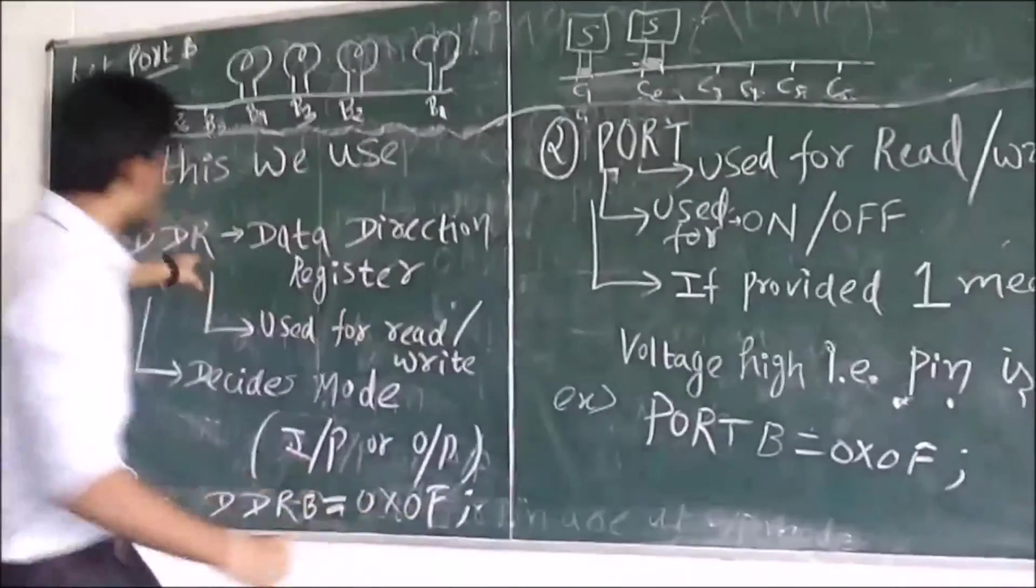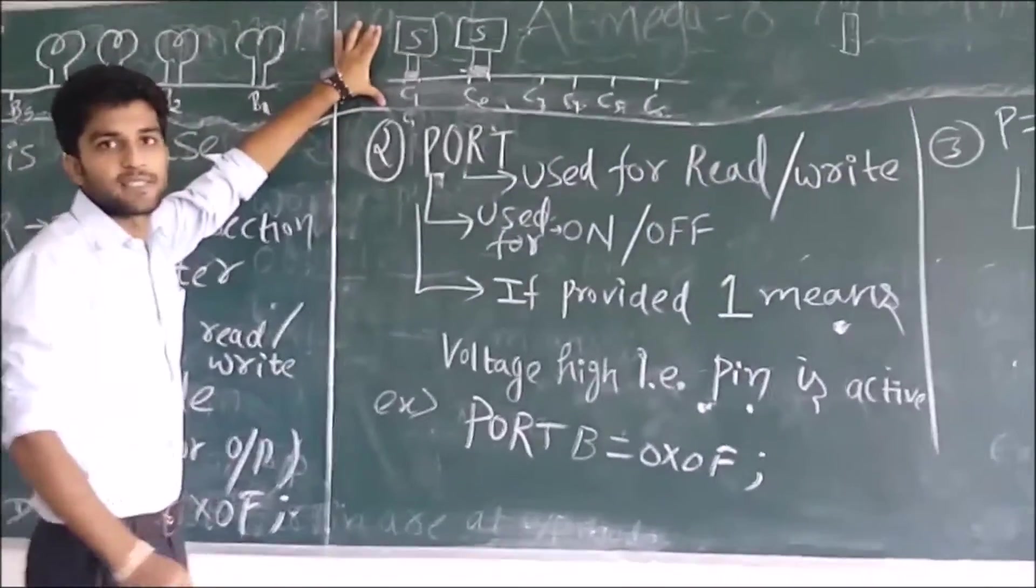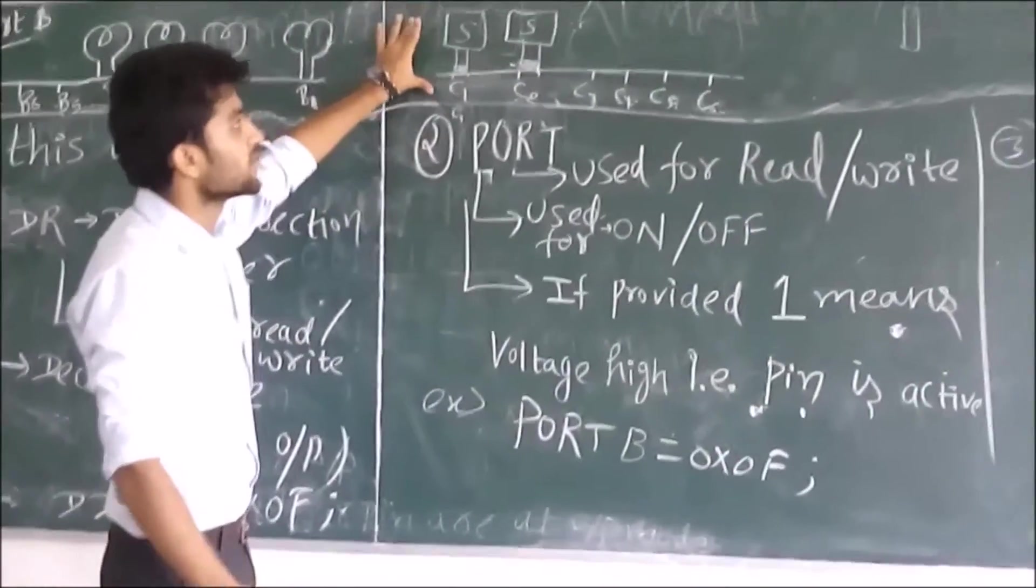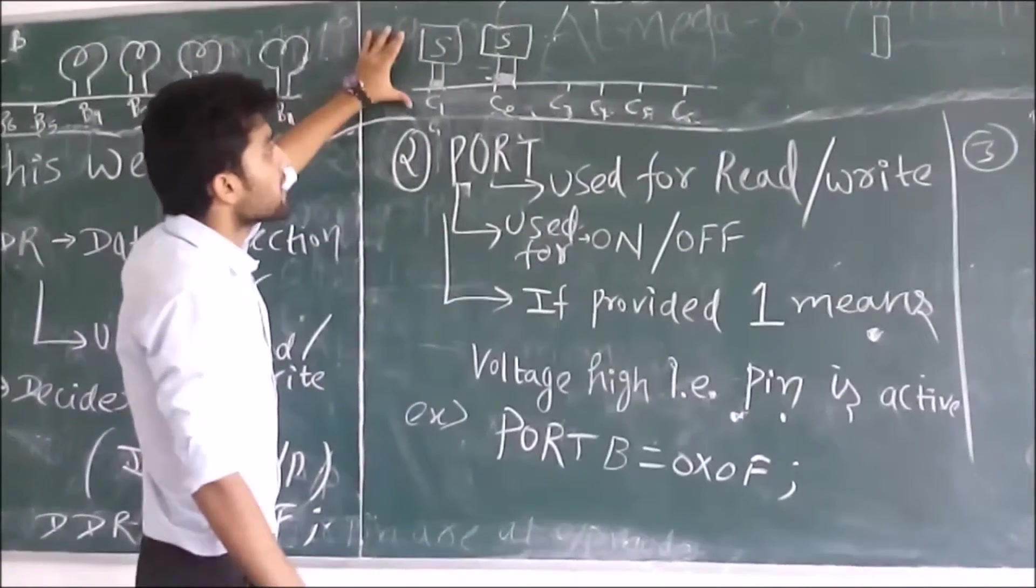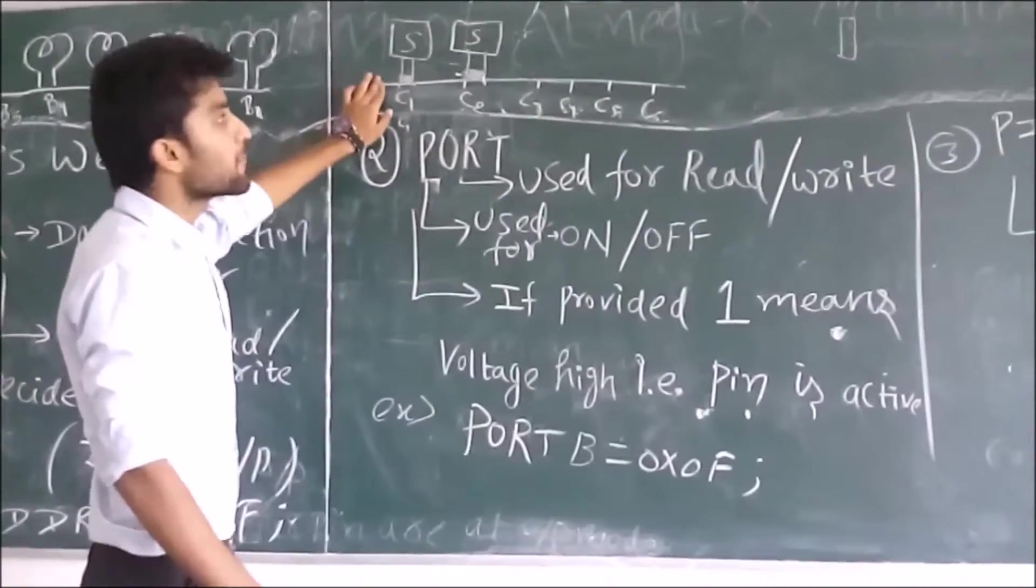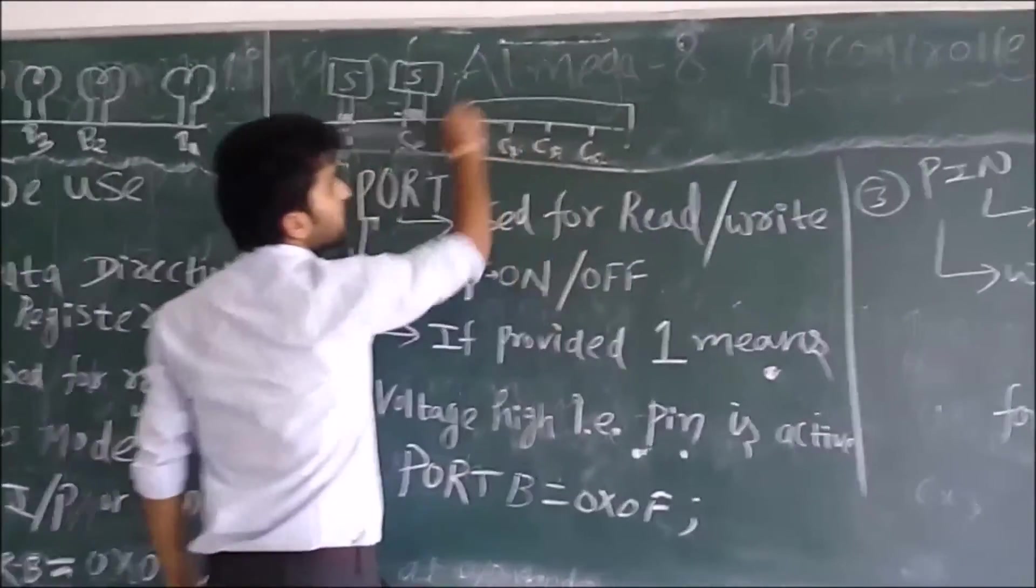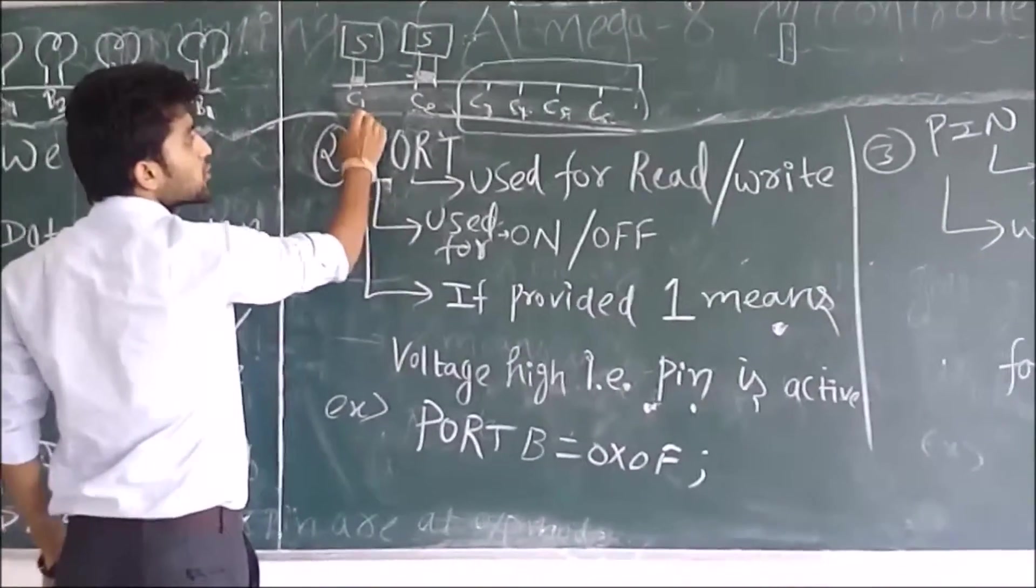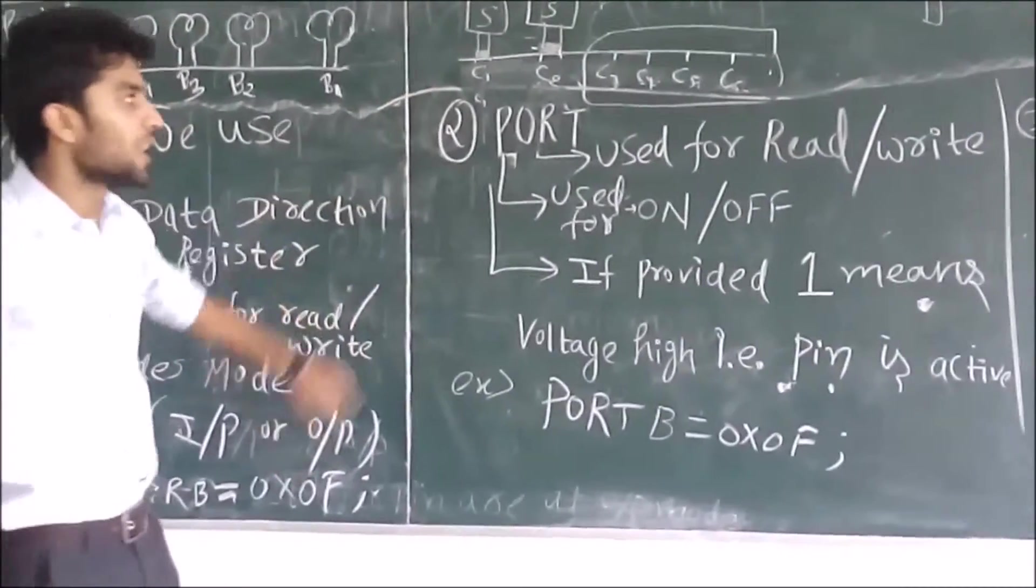Now, if you want that it is in input mode, let's take an example of sensors. Sensors take input. It doesn't give output. So, you assign 0 to it. If you assign 0 to it, then it will be in input mode. You can provide 0x00 here so that it is in input mode.